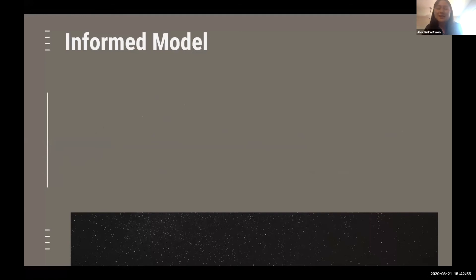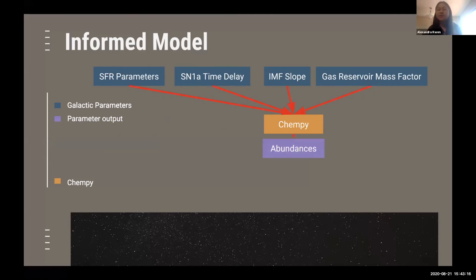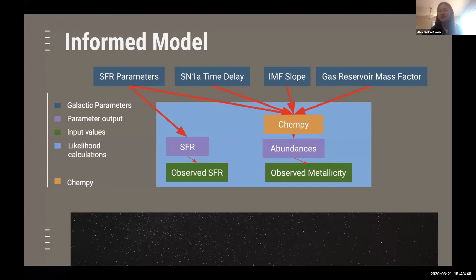The way the informed model works is quite different from the flexible model because we use different parameters. Instead of the chemical evolution parameters, we are using the galaxy parameters, which are all different properties of the galaxy that impact the final abundances of elements. All of these parameters are fed into CHEMPI, which returns the most likely abundances based on those values. We can compare those chemical abundances to the observed metallicities of the stars within the galaxy. Additionally, because star formation rate is so important since it determines when a star was born, we calculate it separately and compare that to the observed star formation rate. This all occurs within the likelihood calculations that give us back the best fit parameter values. This time the parameter values are the galaxy parameters, and we can feed those back into CHEMPI to get the chemical abundance evolution.